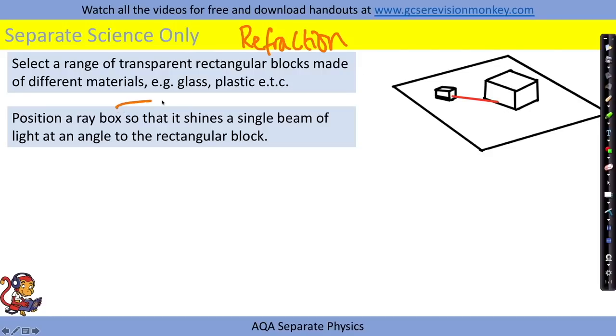We then position a ray box so that it shines a single beam of light at an angle to the rectangular block. So this is our incident ray going in here. Using a pencil we then draw around the block.